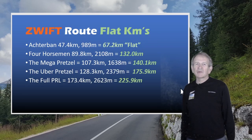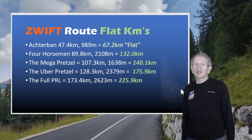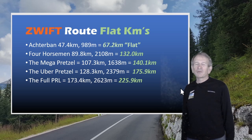Let's see how this rule of thumb applies to some of the tougher climbing routes on Zwift. Octobon — 47.4 km, 989 m climbing — is roughly equivalent to 67.2 km of flat riding. The Four Horsemen — 89.8 km, 2,108 m climbing — gives 132 km flat equivalent. The Megapretzel — 107.3 km, 1,638 m climbing — is equivalent to 140.1 km flat. The Uberpretzel — 128.3 km with 2,379 m climbing — works out to 175 km flat. And the full PRL — 173.4 km with a whopping 2,023 m of climbing — comes out to 225.9 kilometers of flat riding. That's a lot of riding.